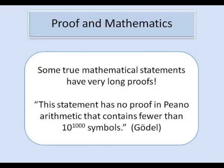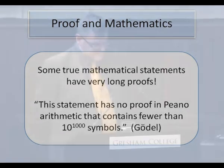Indeed there are mathematical statements whose shortest proof can be as long as you like. One example given by Gödel is a statement that this statement has no proof in Peano arithmetic that contains fewer than 10^1000 symbols. So any valid proof of that proposition in a particular logical system would involve more than 10^1000 symbols. And that statement is true so there can be very very long mathematical proofs.